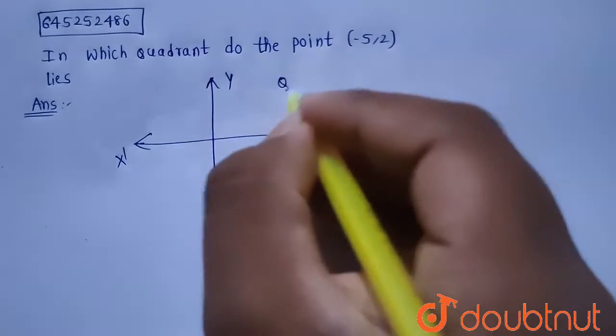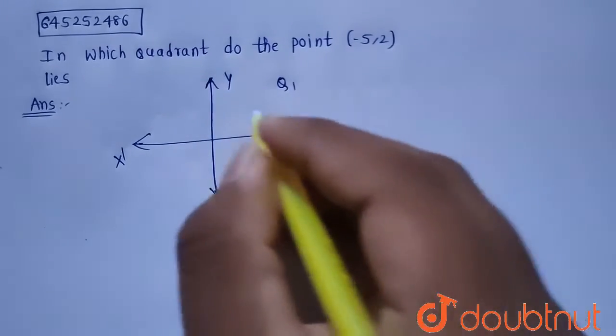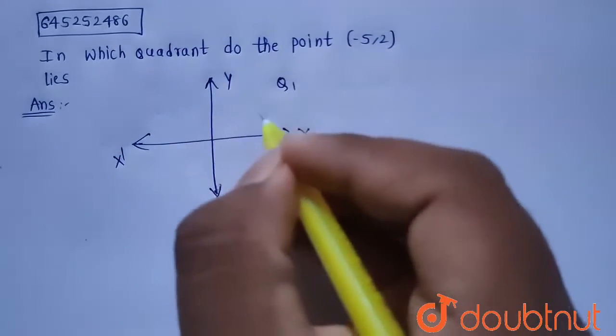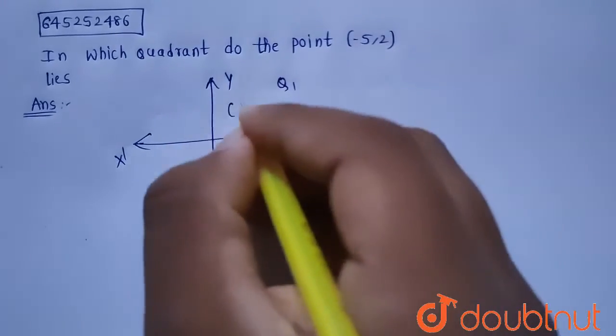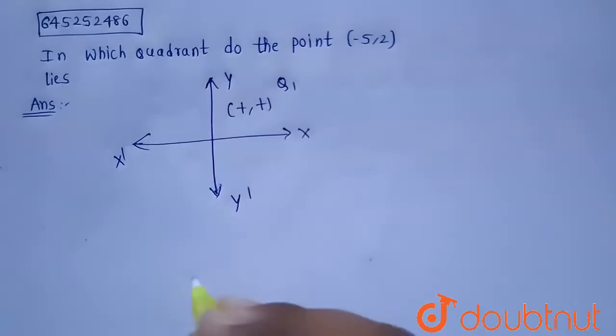Now, let me name this as Quadrant 1. In this quadrant, both the x-axis and y-axis are positive. So both the x-coordinate and y-coordinate will be positive.